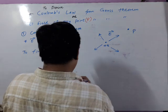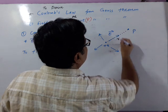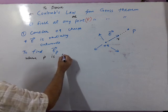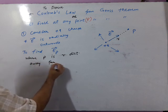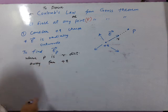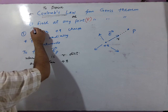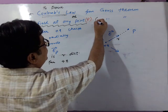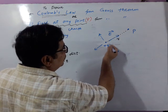Let us say this is the point P, at a distance R from the positive charge. P is R distance away from the positive charge. Our aim is to derive Coulomb's law. For deriving Coulomb's law, we need to derive the electric field at any point using Gauss's theorem. So, first of all, we are finding the electric field at P — this point at a distance R from the positive charge.